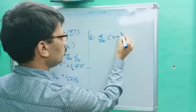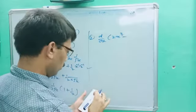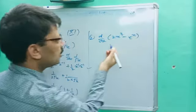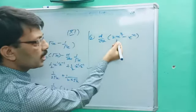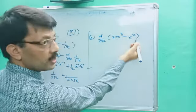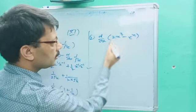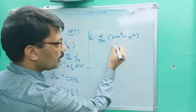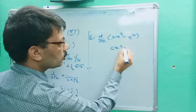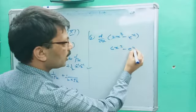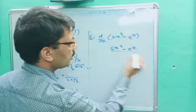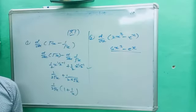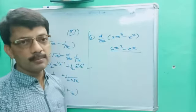Second question: d/dx of 2x³ minus eˣ. Very easy — this is differentiation of the first term minus differentiation of the second. Differentiating 2x³ gives 6x², and d/dx of eˣ is eˣ. So the answer is 6x² minus eˣ.